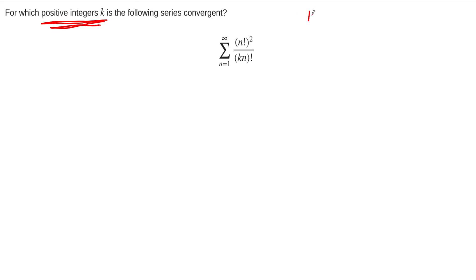So first of all, the positive integers are the numbers 1, 2, 3, 4, etc. And so presumably, the way this question is worded, only a subset of these will yield a convergent series for us.